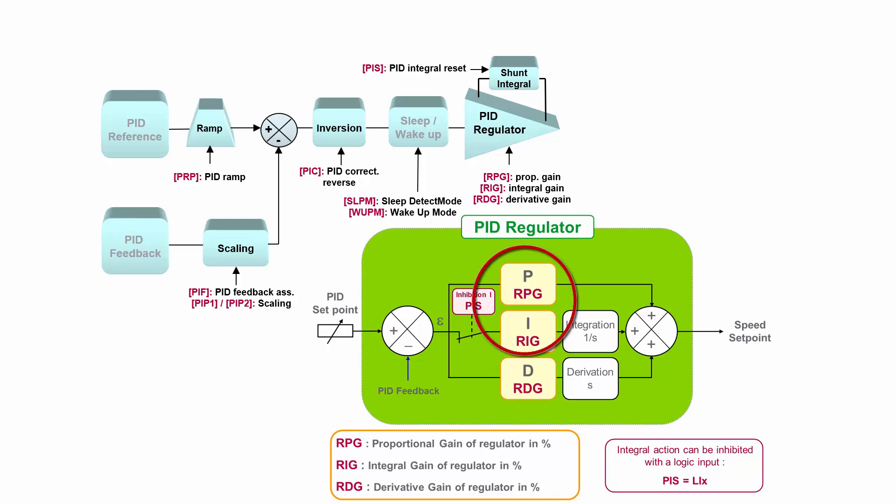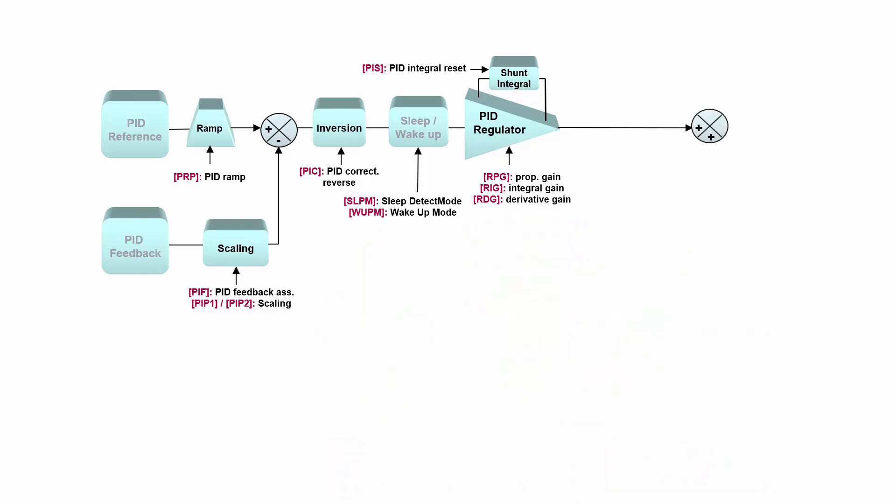Additionally, there is a possibility to inhibit the integrational part. Then output of PID regulator enters an additional summing point, and we will see why. But before entering the summing point, we can set certain limits of our PID output and then additionally ramp up the PID output.